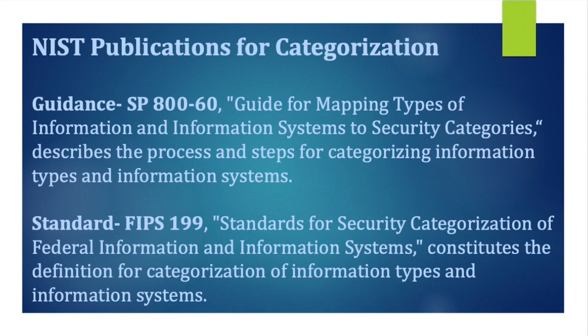Another NIST publication for categorization is FIPS 199. FIPS stands for Federal Information Processing Standard. FIPS 199 is the standard for security categorization of federal information and information systems. In FIPS 199 there are two main important areas to emphasize: the security objectives, which are the CIA — Confidentiality, Integrity, and Availability.